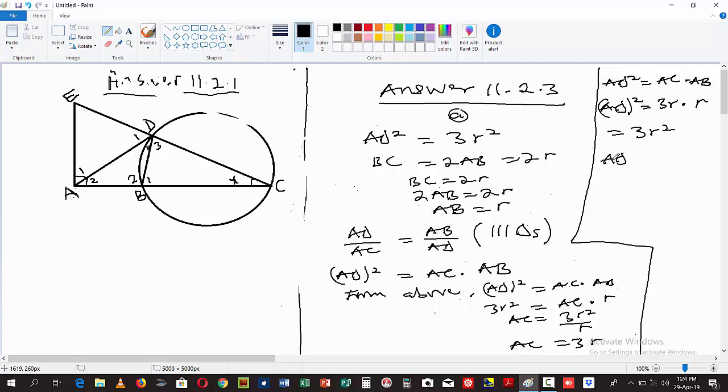So we prove that AD² is equal to 3r². This is the answer for question 11.2.3A. This is the final answer for the question.